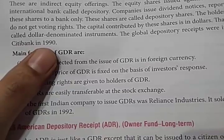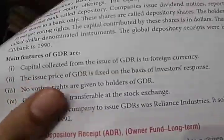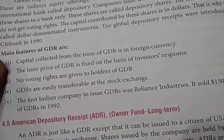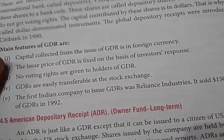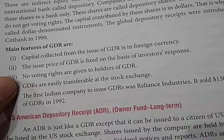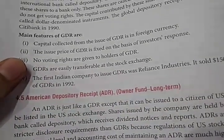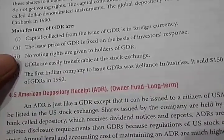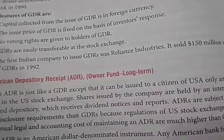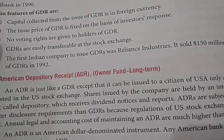Features of GDR: Capital collected from the issue of GDR is in foreign currency; in return, dollars are received instead of rupees. The issue price of GDR is fixed based on investor response. Voting rights are generally not given. GDRs are easily transferable at the stock exchange at 1% to 2%. The first Indian company to issue GDR was Reliance Industries, which sold 150 million dollars worth of GDR in 1992.